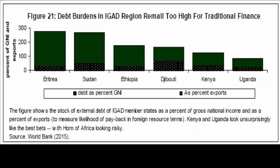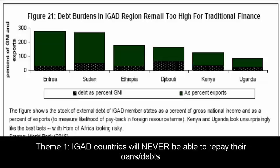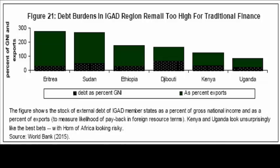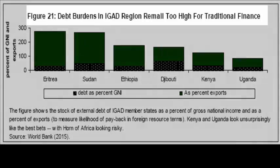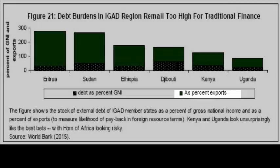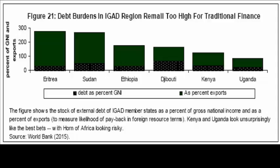Theme one from this series argues that the IGAD economies can never repay the debts they currently have, and thus it is unrealistic to expect them to receive more debt. Figure 21 shows the debt burdens in the IGAD region as a percent of gross national income and imports, so we can see the size of these debts relative to the earning capacity of these economies to pay them off. In many cases, the debts are so large as to suggest they would be defaulted upon at some point in the future. The black part of the bar charts shows this debt as a percent of gross national income, and we see that the debt is largest for Djibouti and relatively large for Sudan.